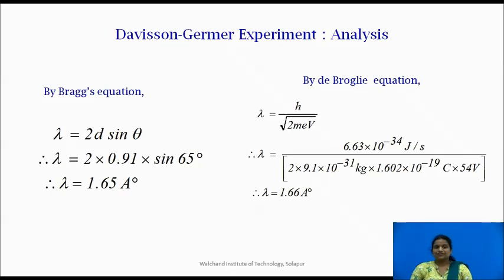So, if we calculate the wavelength by Bragg's equation that is lambda is equal to 2d sin theta, the wavelength comes to be 1.65 angstrom unit.